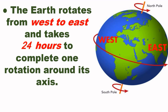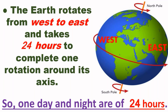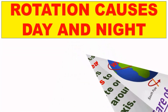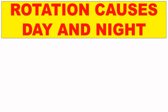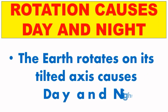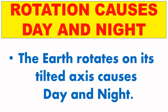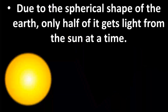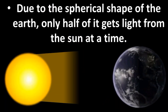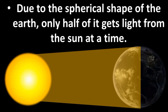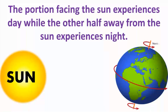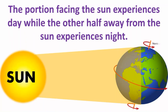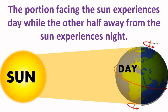During the spinning motion each half is changing its position every 12 hours, so one day and night are of 24 hours. The earth rotates on its tilted axis, which causes day and night, and due to the spherical shape of the earth only half of it gets light from the sun at a time. The portion facing the sun experiences daytime while the other half away from the sun experiences the nighttime.